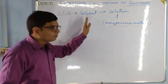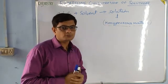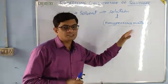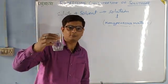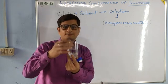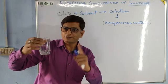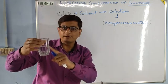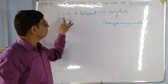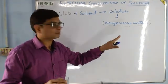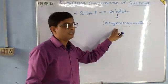Solute mixed with solvent gives us a solution. What do you mean by solution? A homogeneous mixture. For example, if I have one glass of water and add a pinch of salt, you cannot see the salt. If there is no visible boundary between the solute and solvent, such a substance is called a homogeneous mixture, and a homogeneous mixture is called a solution.